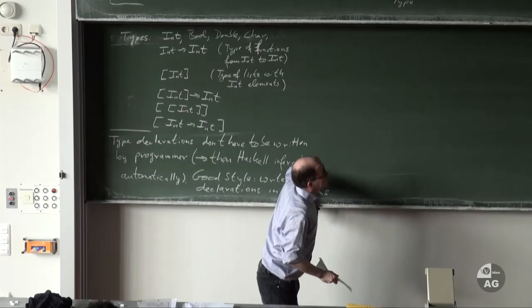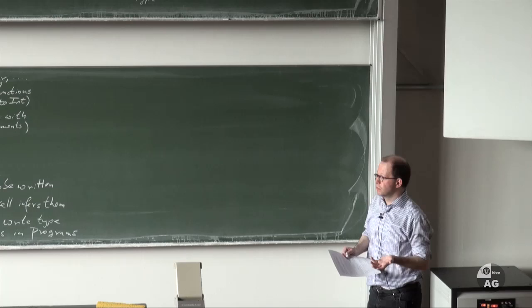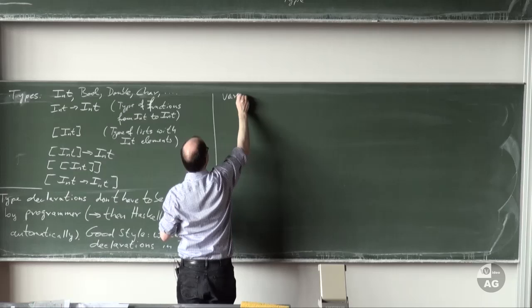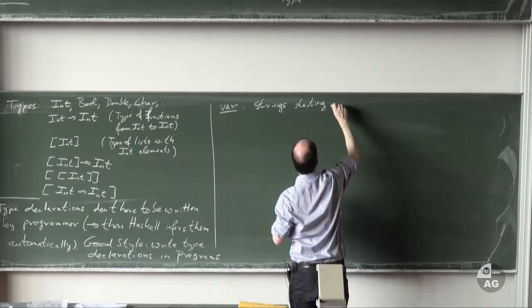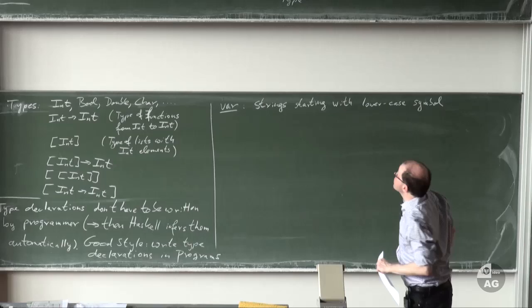Variable names in Haskell are strings starting with a lowercase symbol. Function declarations describe what a function does — for example, square x = x * x. The function left-hand side is 'square x' and the right-hand side is 'x * x'. Basic operations like multiplication are predefined in Haskell.